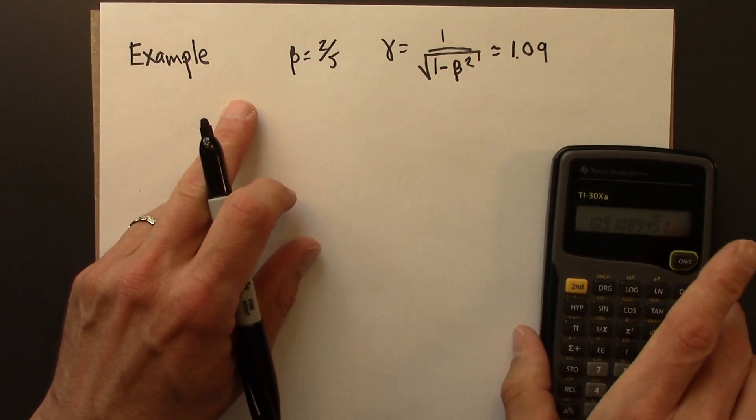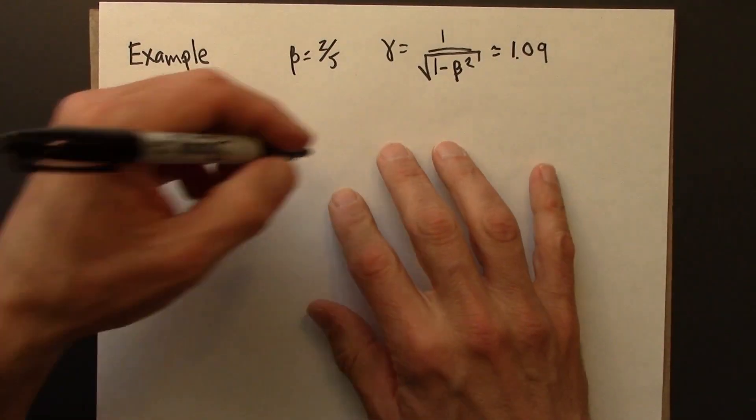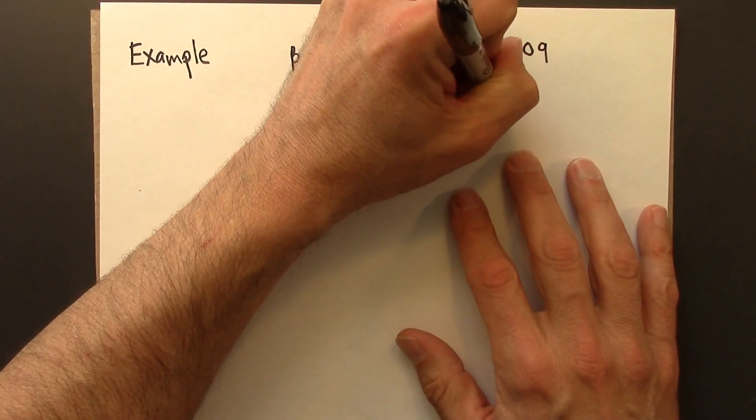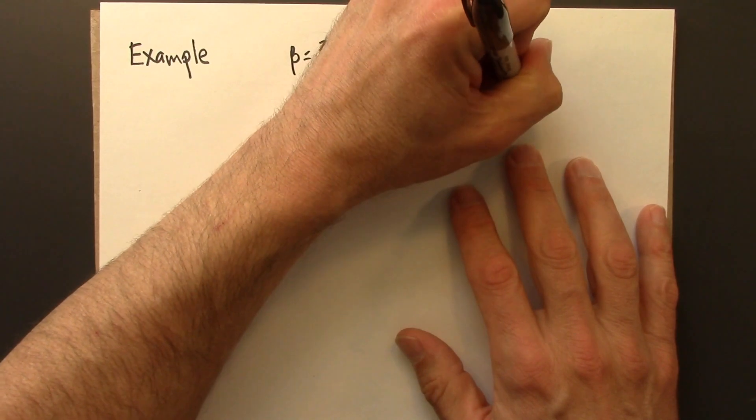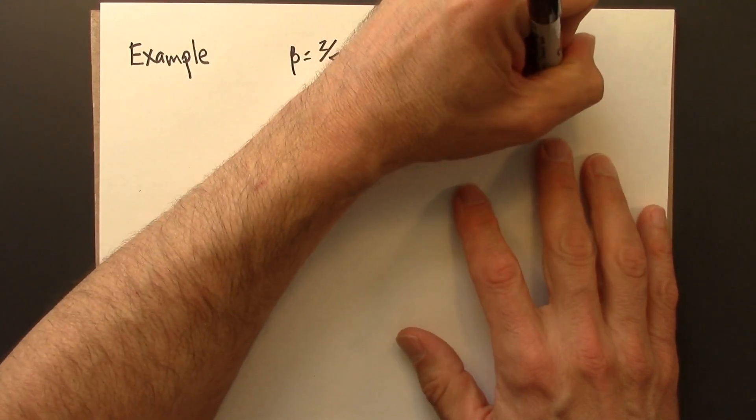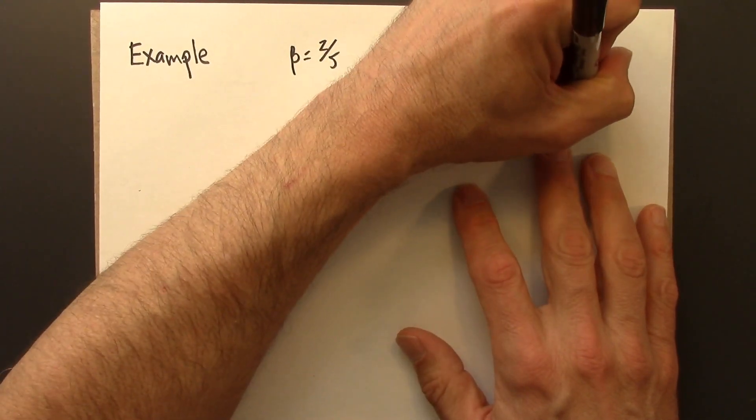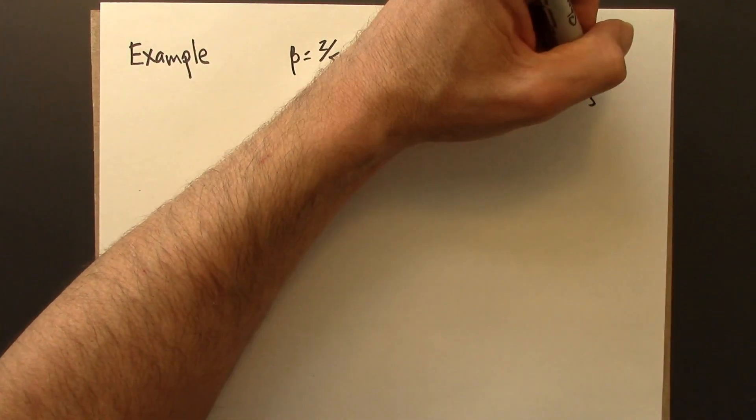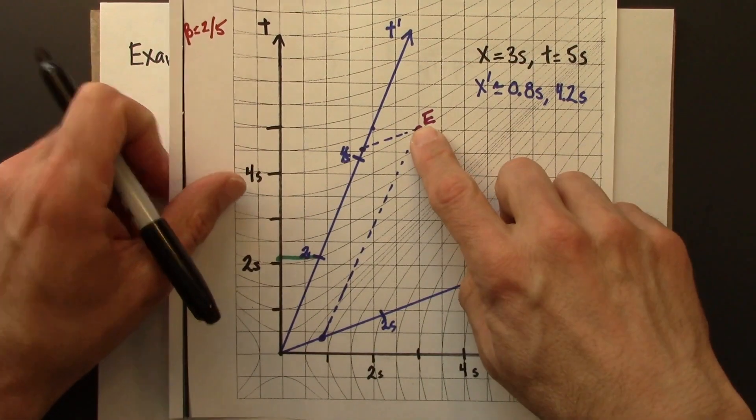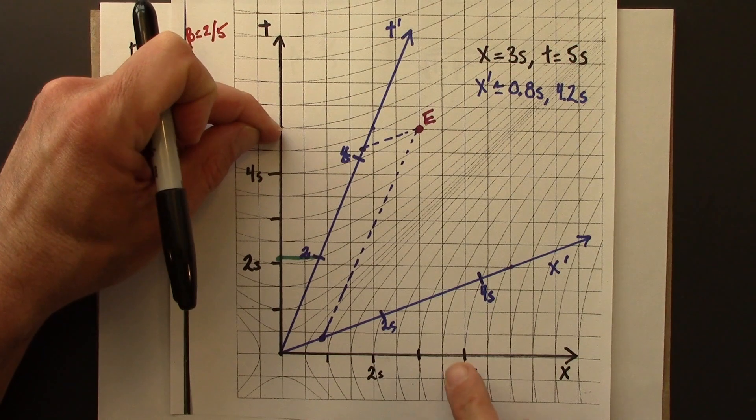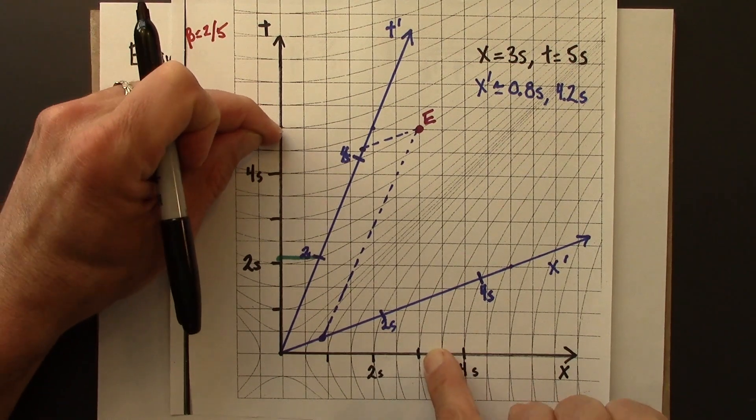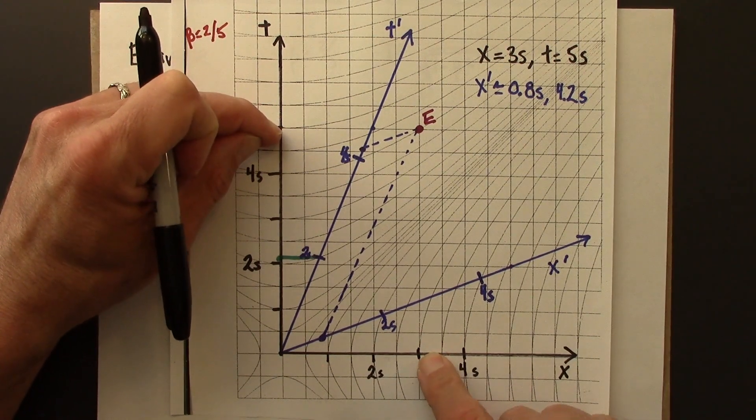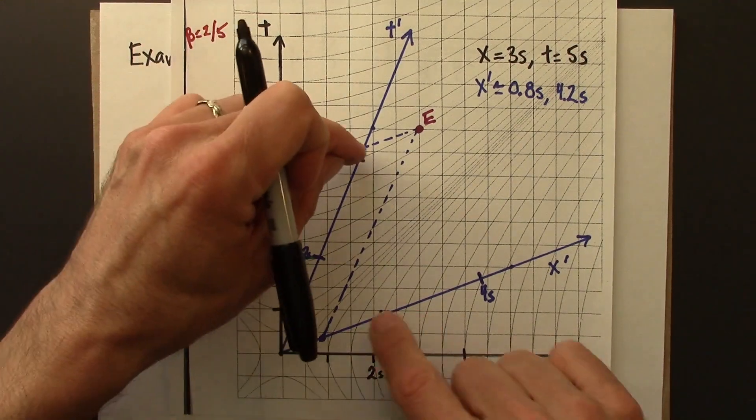So that's something we can evaluate on a calculator. I did that by just plugging in two-fifths, or 0.4, in for beta. So what do we know? We know in this problem that x equals 3 seconds, t is 5 seconds.